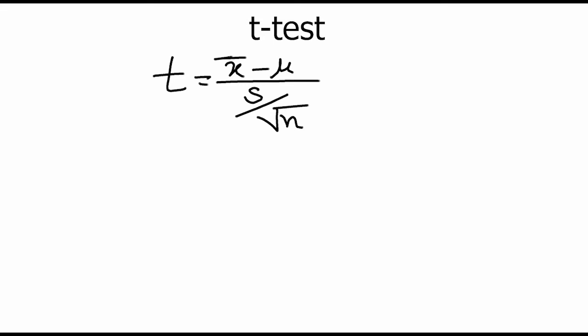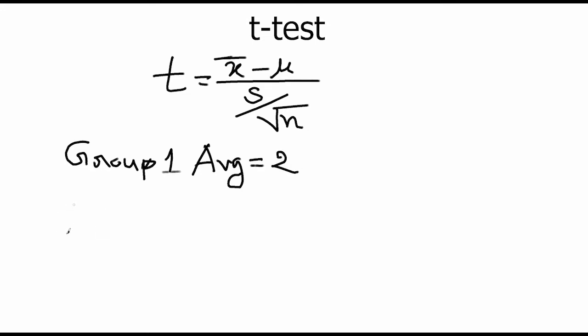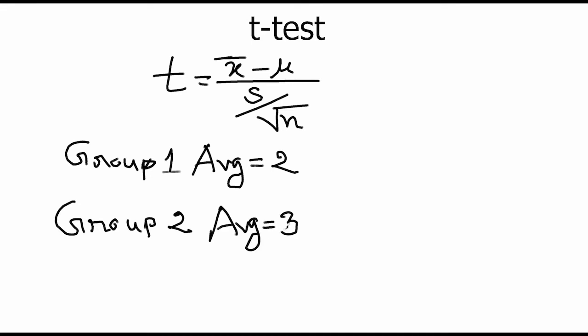Going back to the initial example: we have two groups. Group one has an average of two and group two has an average of three. The null hypothesis in this case states that there is no difference between the mean of group one and the mean of group two. The alternative hypothesis states that there is a difference between these two groups. This is considered a two-sample t-test.